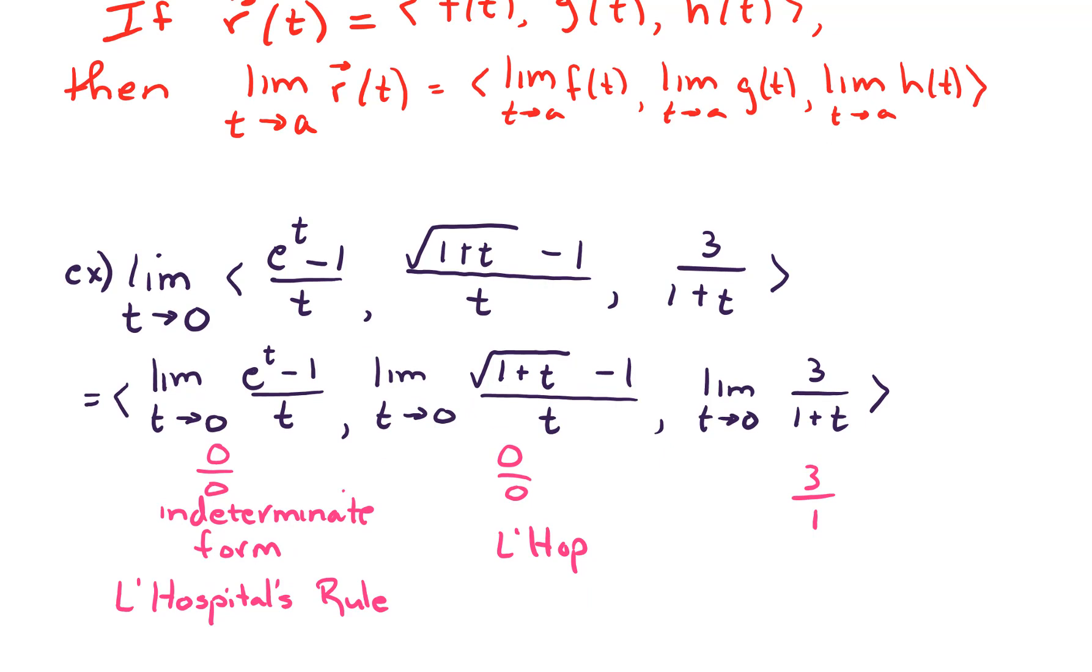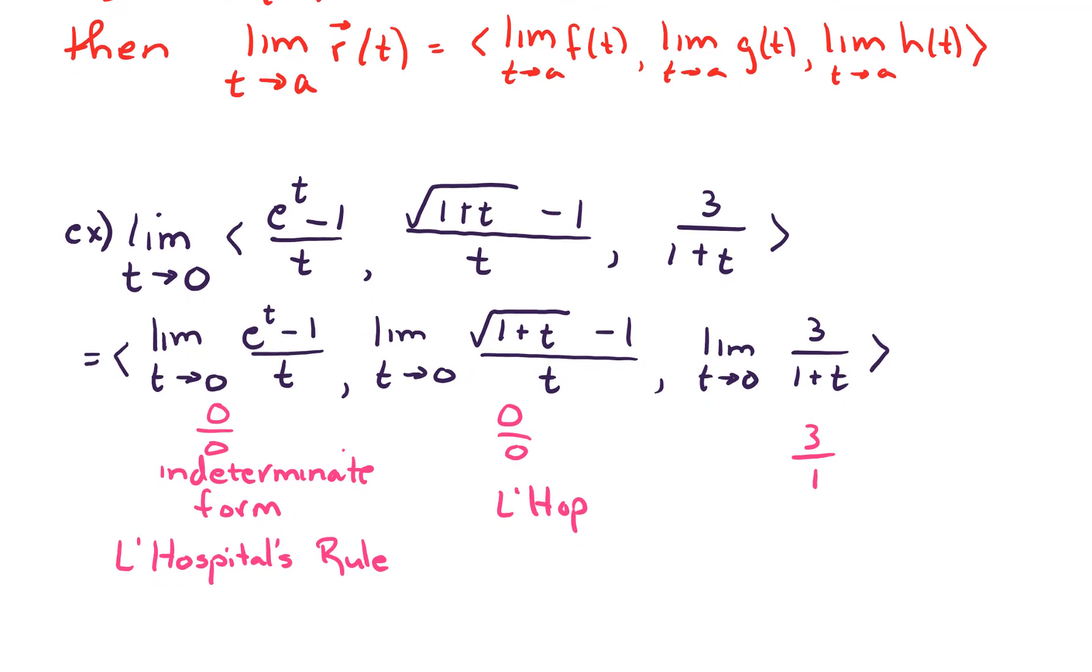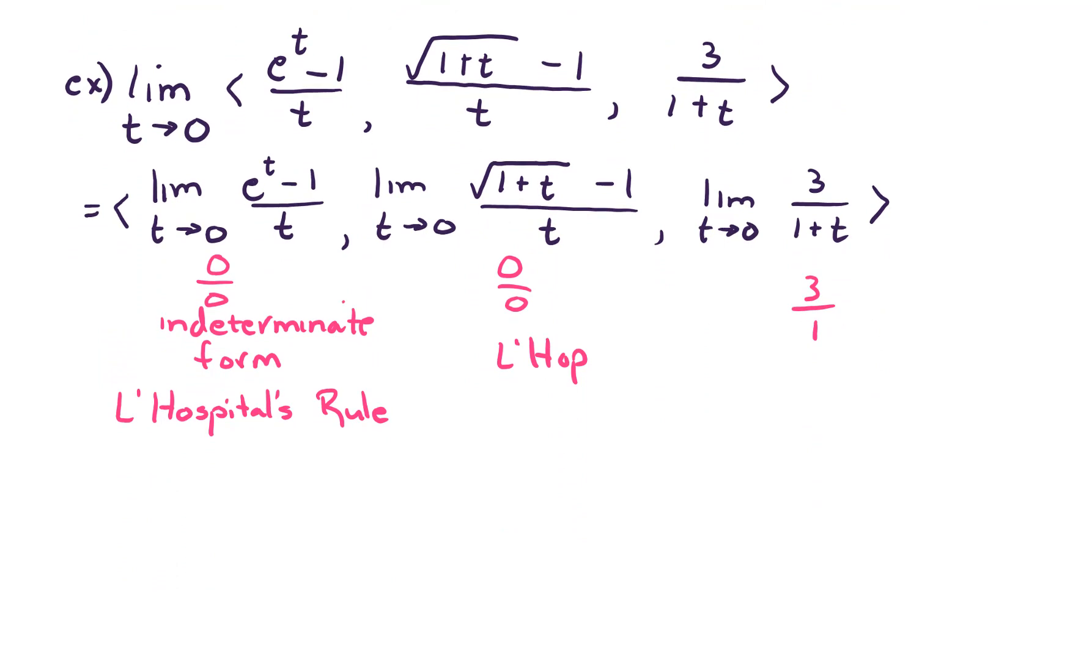Let's apply L'Hopital's Rule. L'Hopital's Rule says that we need to do the derivative of the numerator over the derivative of the denominator. For the first component, I still have to write down limit as t goes to 0. The derivative of the numerator is e to the t, and the derivative of the denominator is just 1. For the second component, I'm going to do L'Hopital's Rule again.